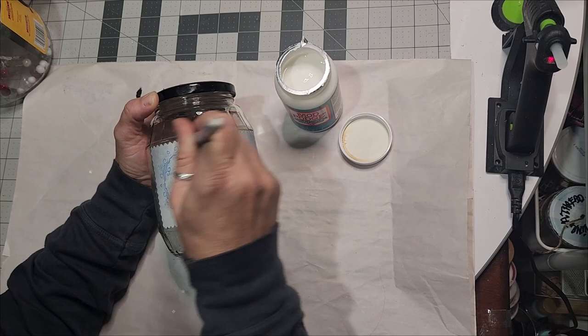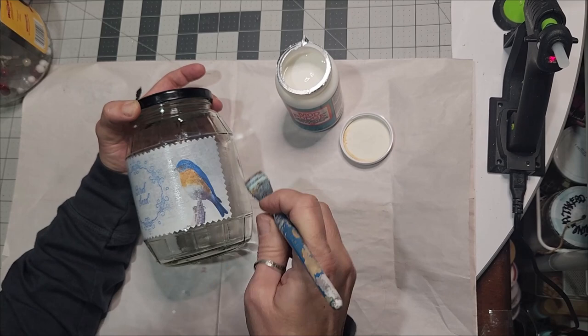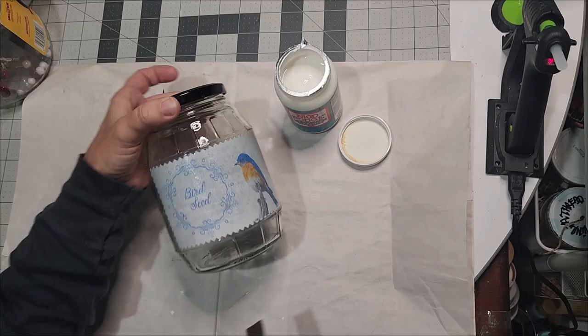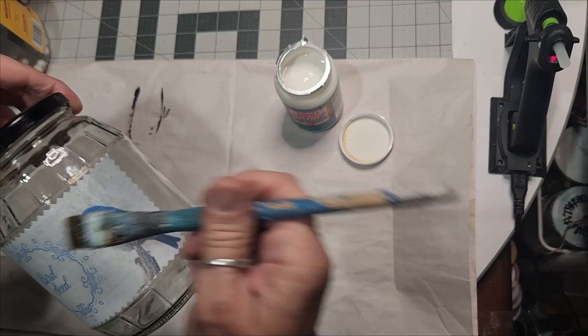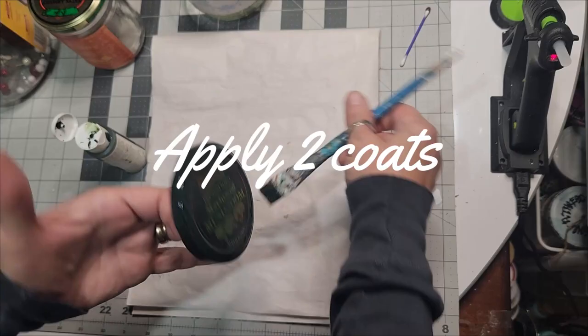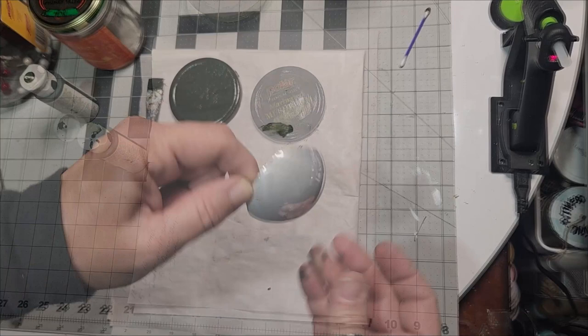You'll want to allow it to dry in between the coats because you want to apply at least two coats to your label. This makes them totally dishwasher safe. You can actually put these in the dishwasher and the label will remain on there until you remove it. And once again, apply two coats.